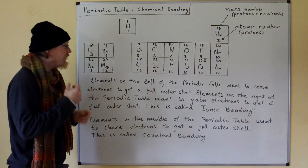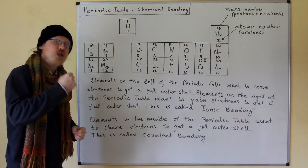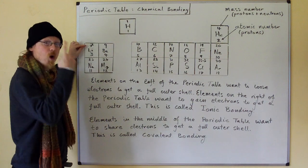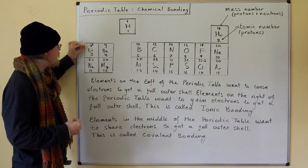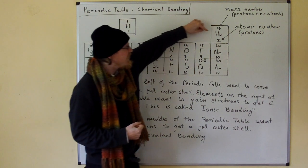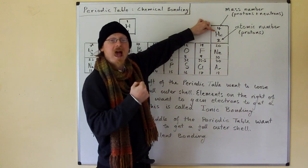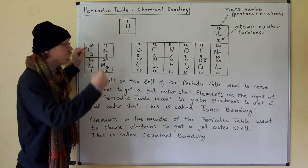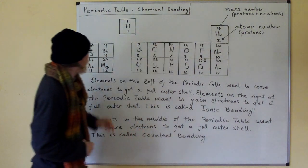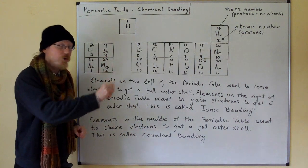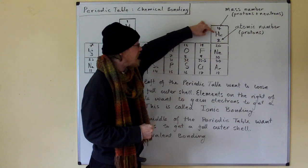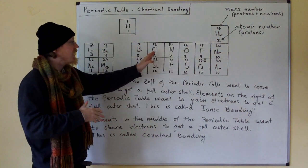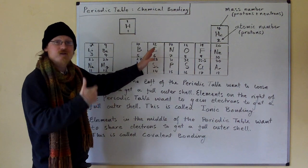Elements on the left of the periodic table want to lose electrons to get a full outer shell. Lithium has only got one electron in its outer shell, so if it can lose that, it will have the electron structure of helium, giving it a full outer shell. So lithium wants to lose one electron and be like helium. Beryllium wants to lose two electrons and be like helium, and so on, until you get to the middle, where it becomes easier to share electrons than to lose them.